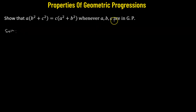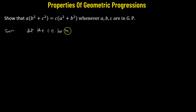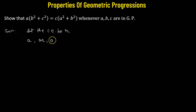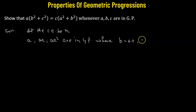It's already given that a, b, and c are in geometric progression, so let's specify the common ratio. Let the common ratio be represented by the letter r. The first term will be a, the second term b equals a times r, and c equals a times r squared.